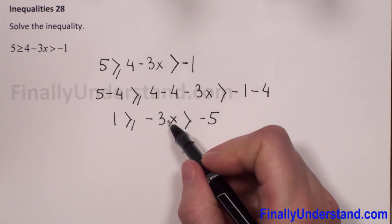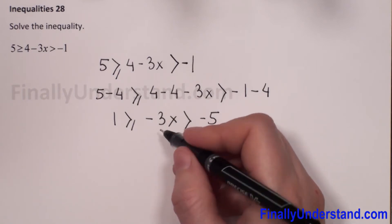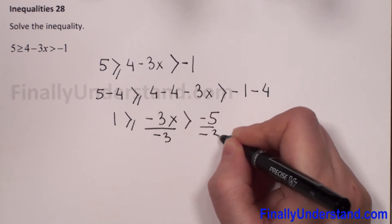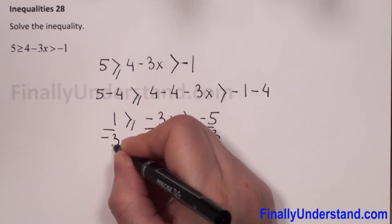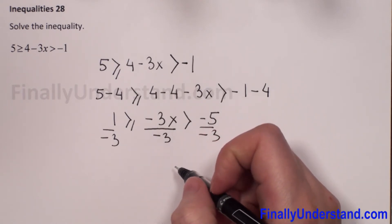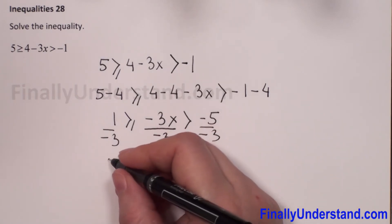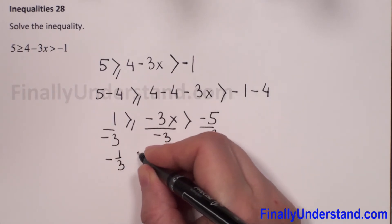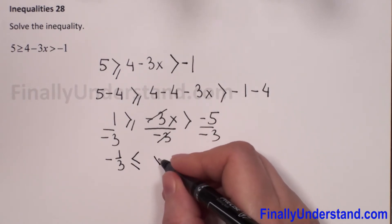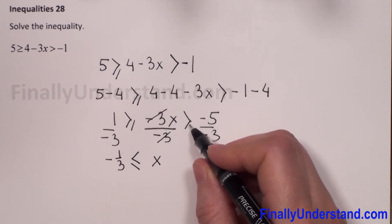Because I have multiplication here and I need to find x, I will divide each member by negative 3. We know that when we divide by a negative number, we have to change the direction of the inequality. So 1 divided by negative 3 is negative 1 third, and the inequality becomes less than or equals. Negative 3x divided by negative 3 gives x.